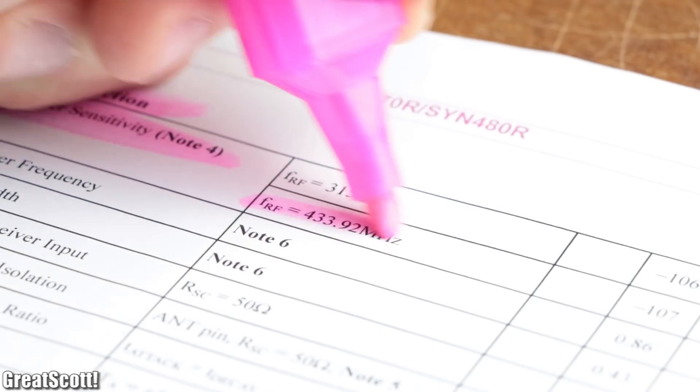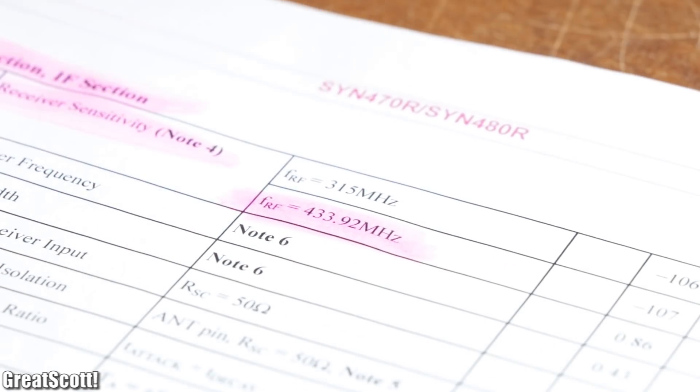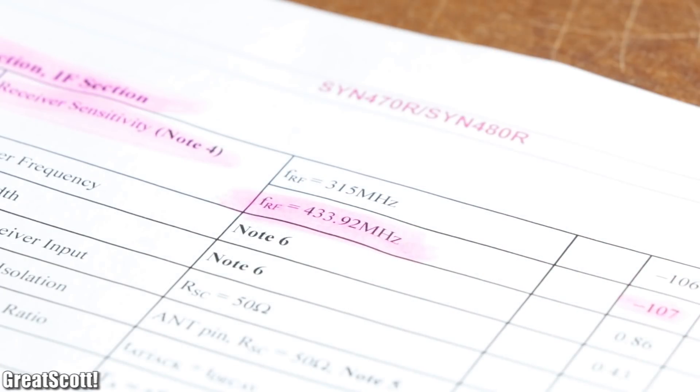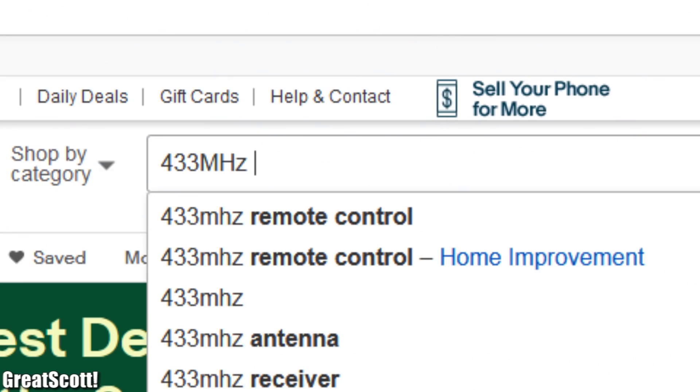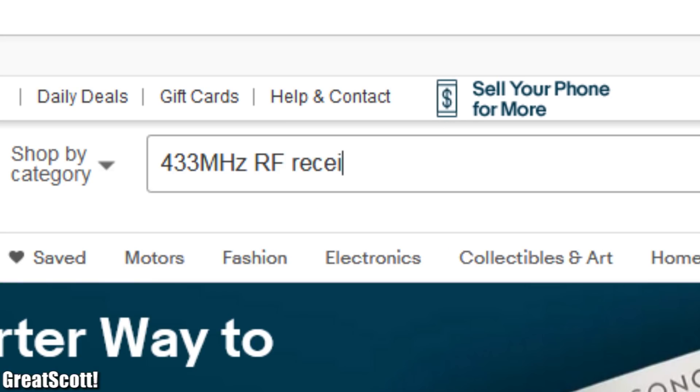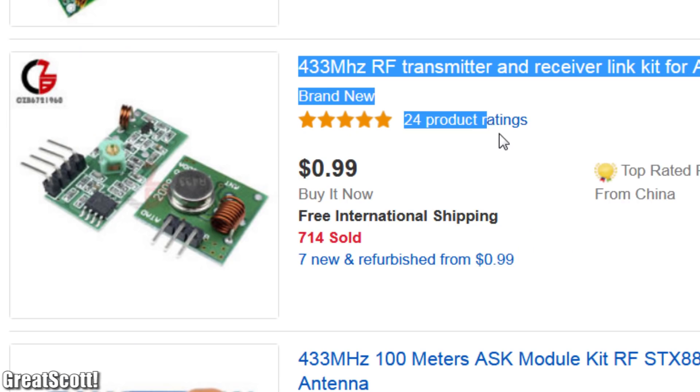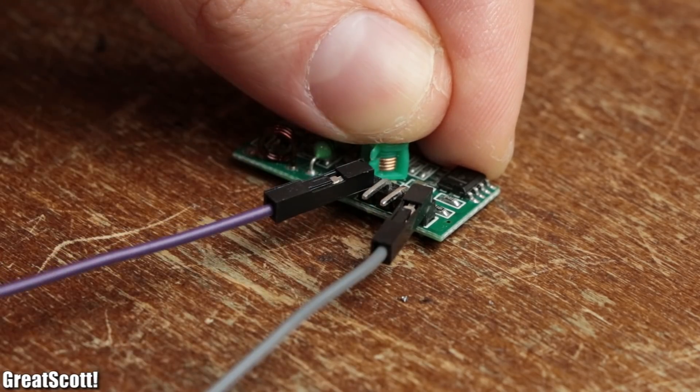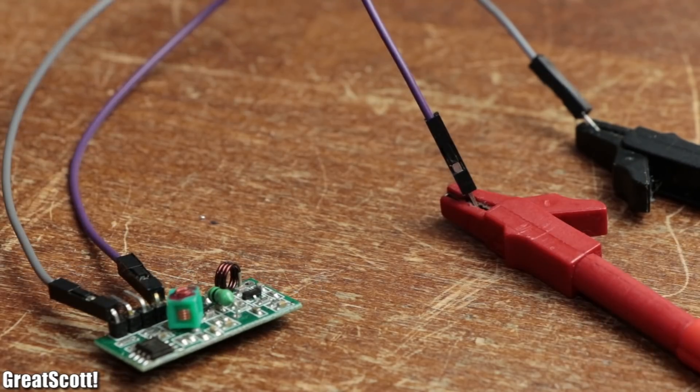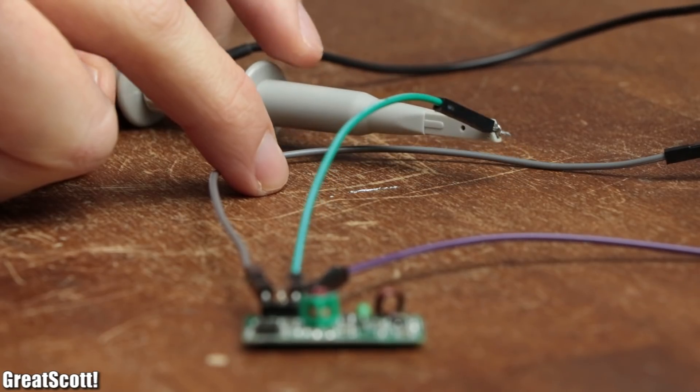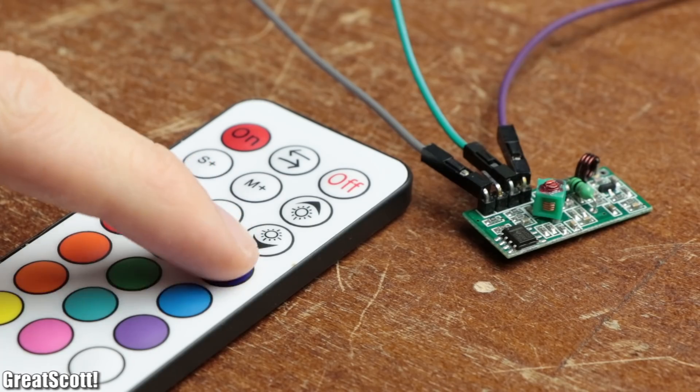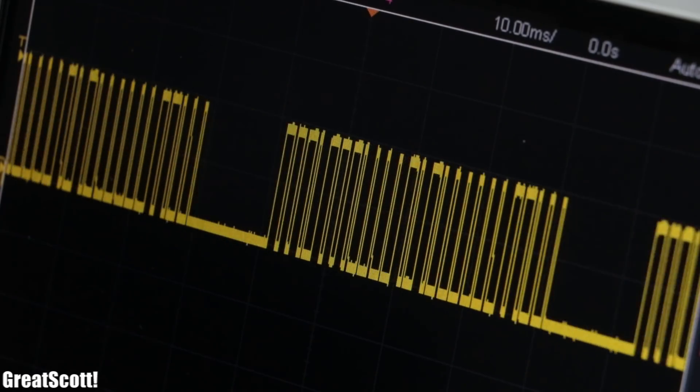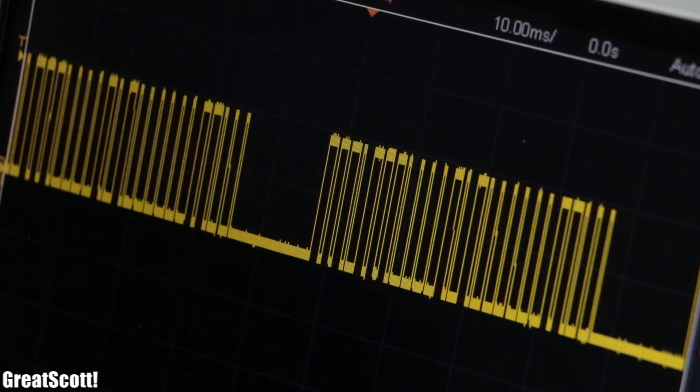Thankfully though since I knew that the receiver and transmitter work with a carrier frequency of 433 MHz I simply searched for another 433 MHz receiver on eBay and quickly found one. After receiving it I hooked its VCC and ground pin up to 5V and its data pin to the oscilloscope. And sure enough after pushing a button on the LED remote I was greeted with a lovely looking data signal that we can work with.